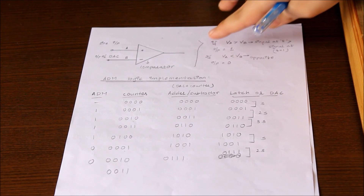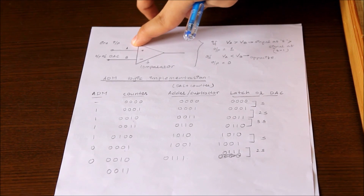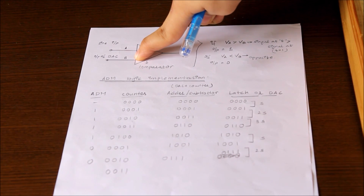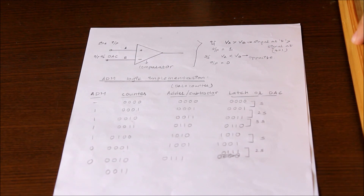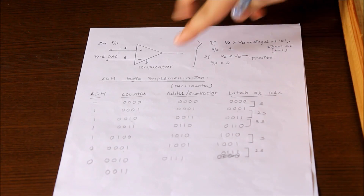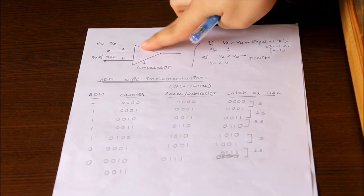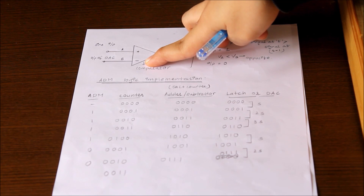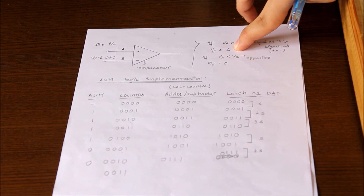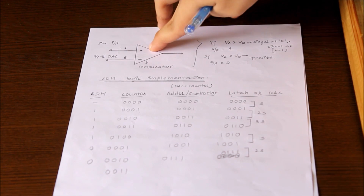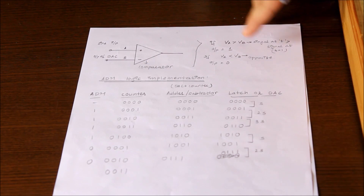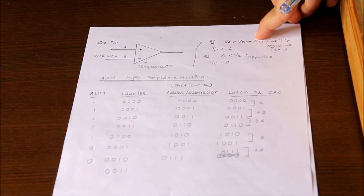The comparator takes the input signal and the other input is a sample-delayed DAC output from the DAC output block. If the comparator finds the current signal is greater than the last one, it gives output high, which is one. Otherwise, if the current signal is lesser than the last sample, the output will be zero. This generates our actual ADM signal.